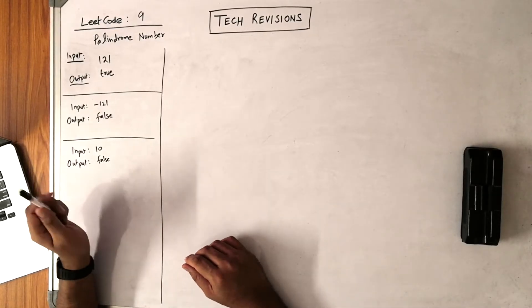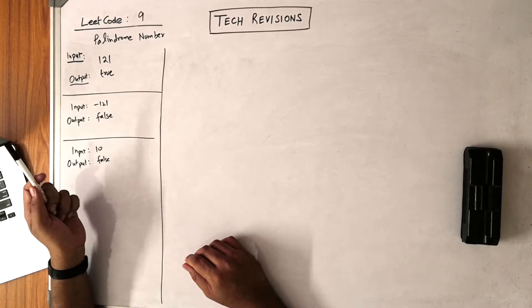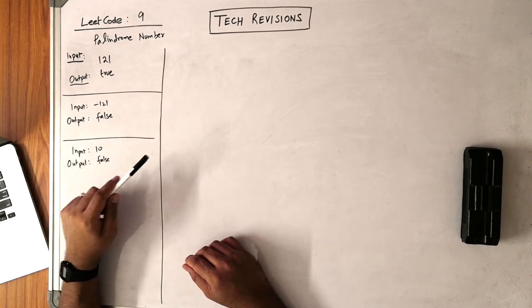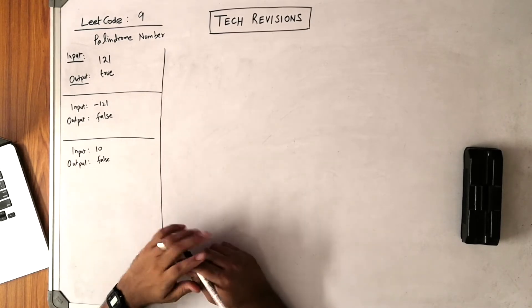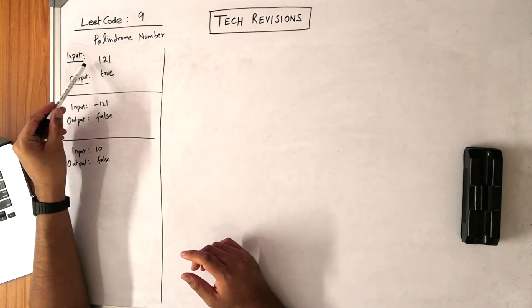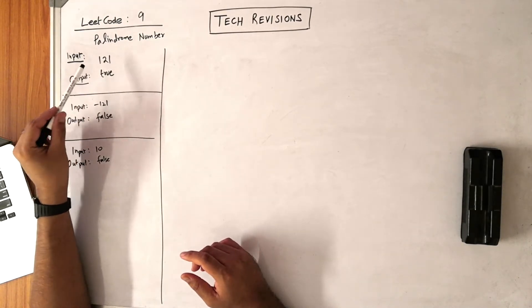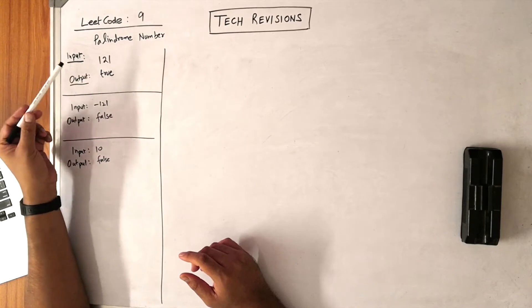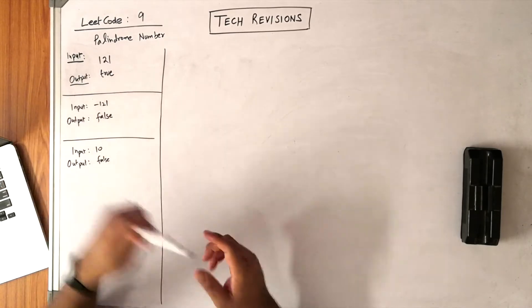Okay guys, today we'll look at LeetCode problem number 9. The title of the problem is Palindrome Number. It's a very simple problem. Given an input, suppose you're given an input integer 121, you have to return whether this integer is a palindrome or not. In this case, the output is true.